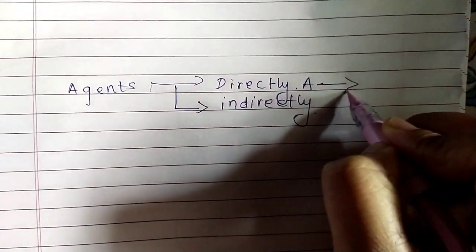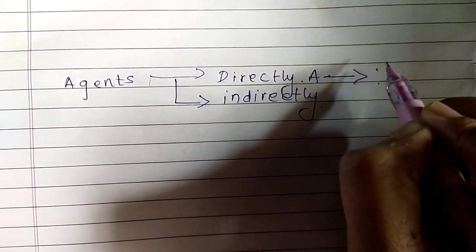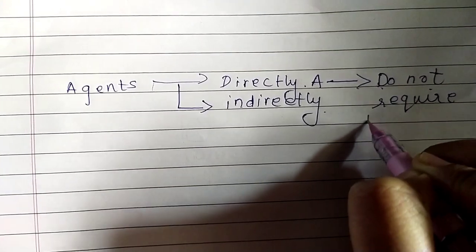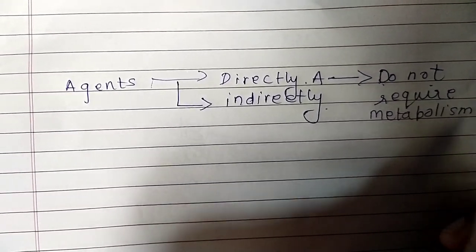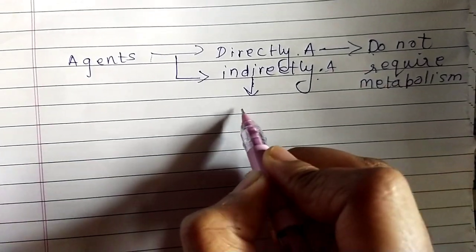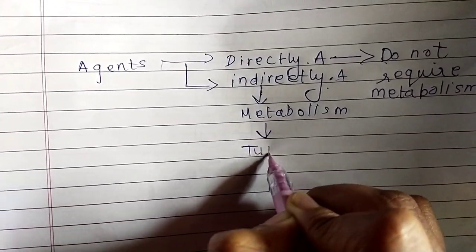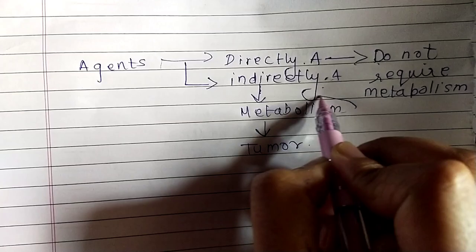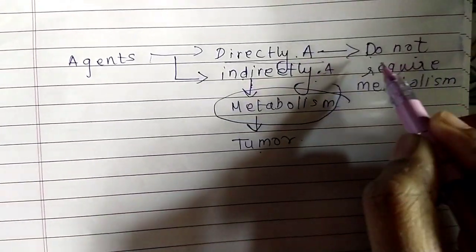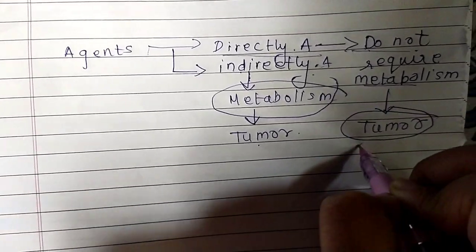Directly acting agents do not require metabolism. Indirectly acting agents require metabolism for the formation of a tumor — whenever there is metabolism of an indirectly acting agent, a tumor is formed. But in directly acting agents, there is no metabolism; hence, they attack the target cell directly and lead to the formation of a tumor.